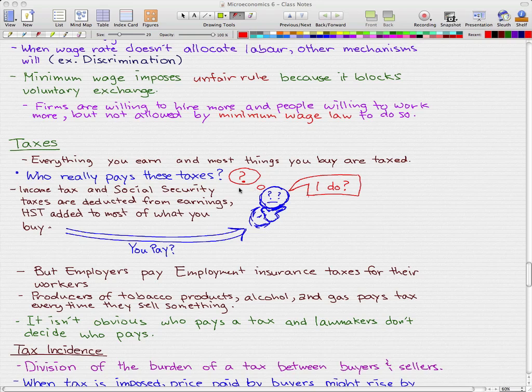Do you really think that from your perspective, you pay all the taxes? Income tax and social security taxes are deducted from your earnings. HST, which is something we have in British Columbia where I live, is added to most of what I buy. So from this perspective, we can say that I pay most of the taxes.